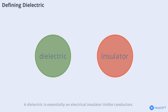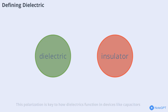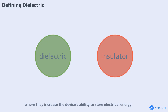A dielectric is essentially an electrical insulator. Unlike conductors, which allow electric current to flow freely, dielectrics resist this flow. However, when placed in an electric field, dielectrics can become polarized. This means their internal charges shift slightly, creating tiny electric dipoles. This polarization is key to how dielectrics function in devices like capacitors, where they increase the device's ability to store electrical energy.